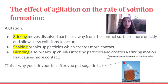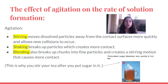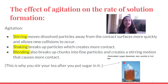Agitation also affects the rate of solution formation. Stirring moves dissolved particles away from contact surfaces more quickly, allowing new collisions to occur. Shaking breaks up particles, creating more contact. Blending breaks up chunks into fine particles and creates a stirring motion that causes more contact. More contact and collisions directly correlates to a faster rate of solution formation — this is why we stir our tea after we put sugar in it.